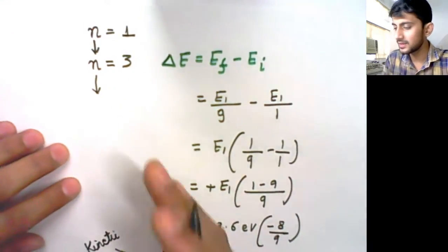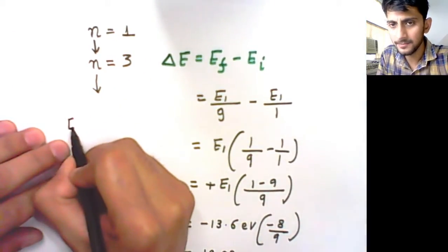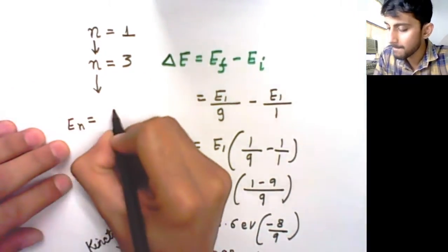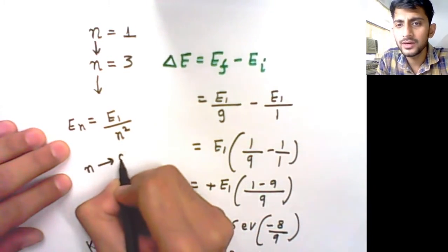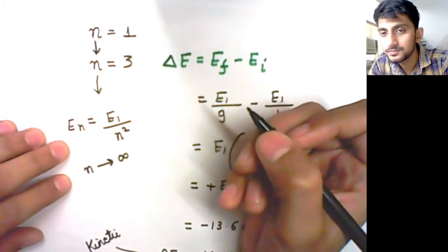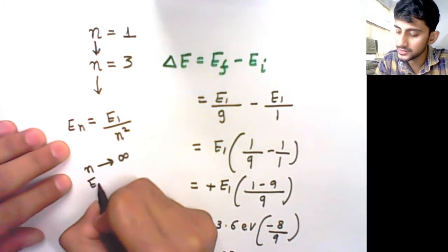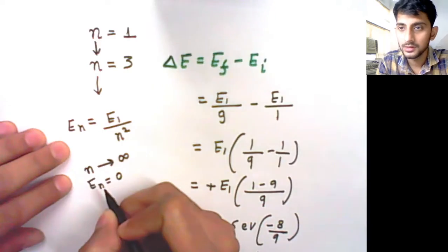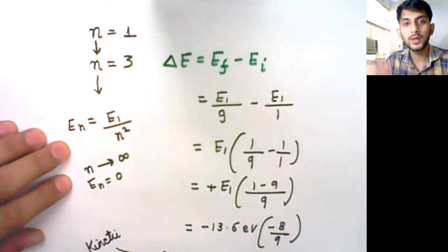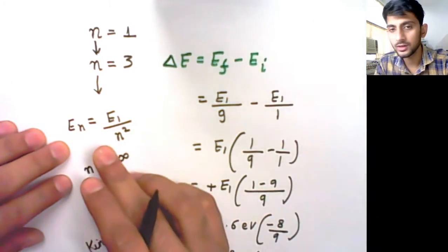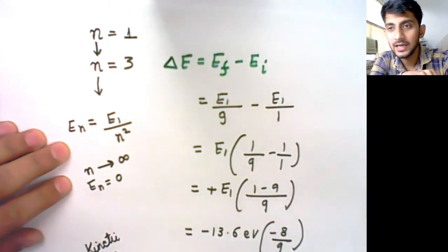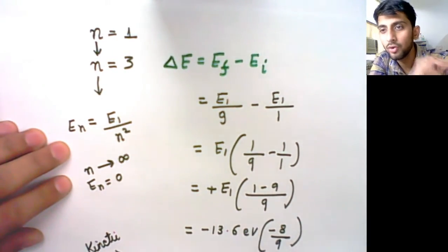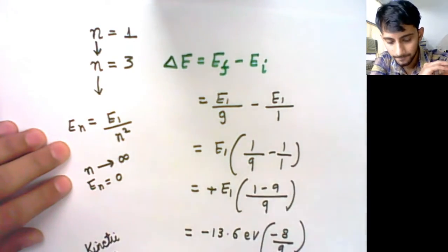If n equals infinity, the formula En = E1/n² gives zero. This means if an electron is at infinite quantum number, no energy is needed to remove it — it is no longer bound to the nucleus of the hydrogen atom.